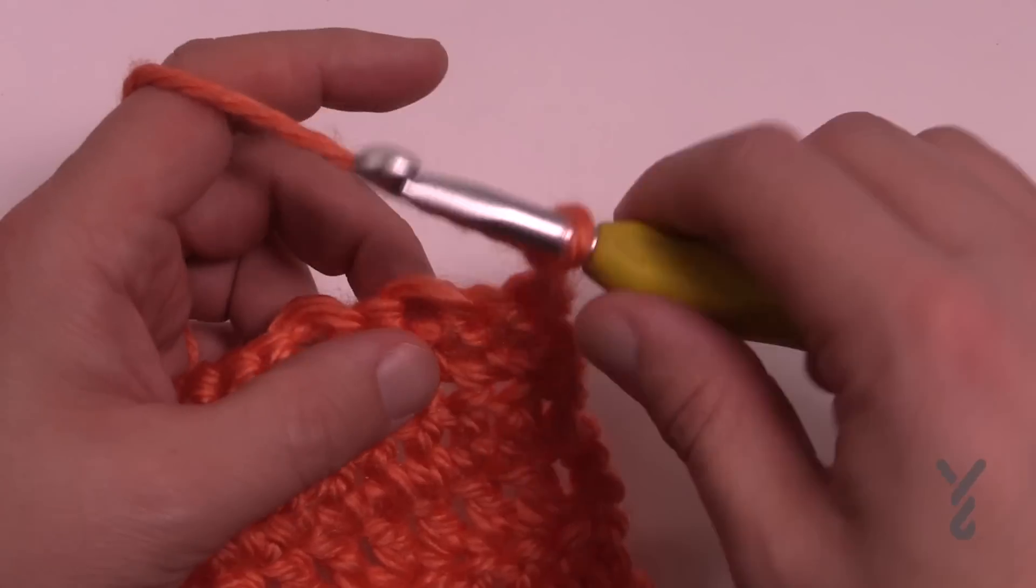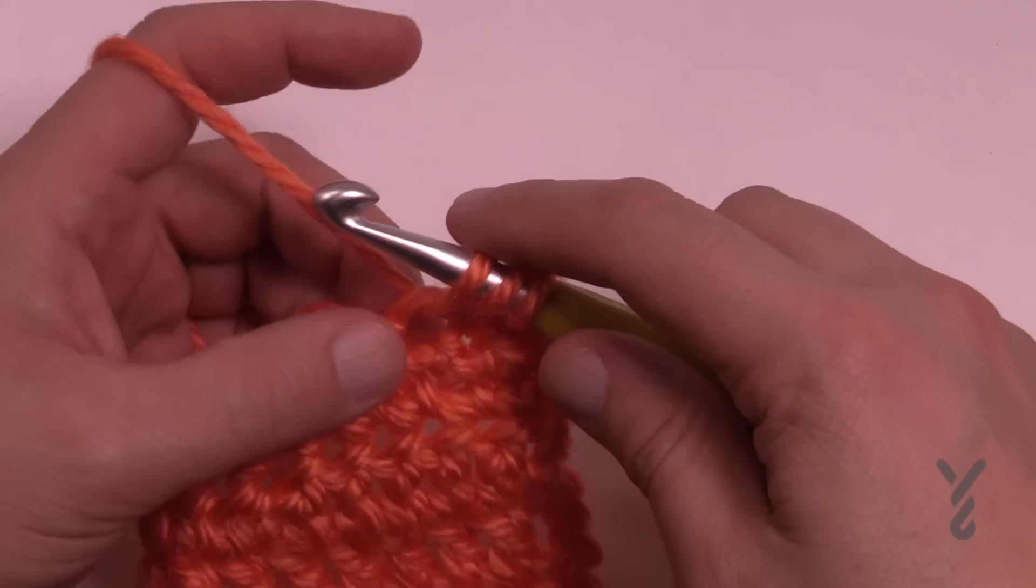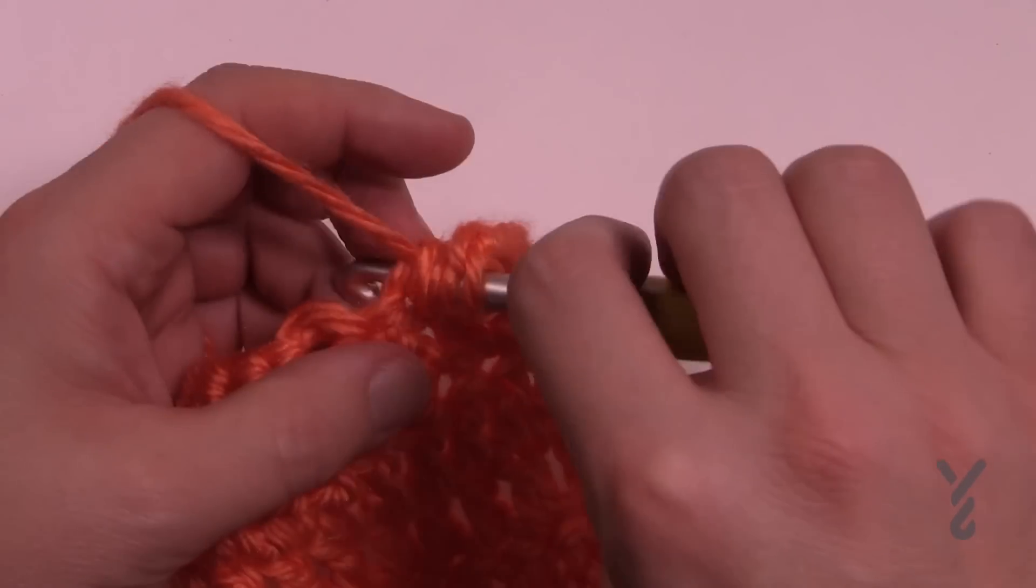So let's just say it's two for this one. So we're gonna wrap the hook and going into the stitch, pull through, and then we're gonna go again. So wrap the hook into the stitch and pull through.